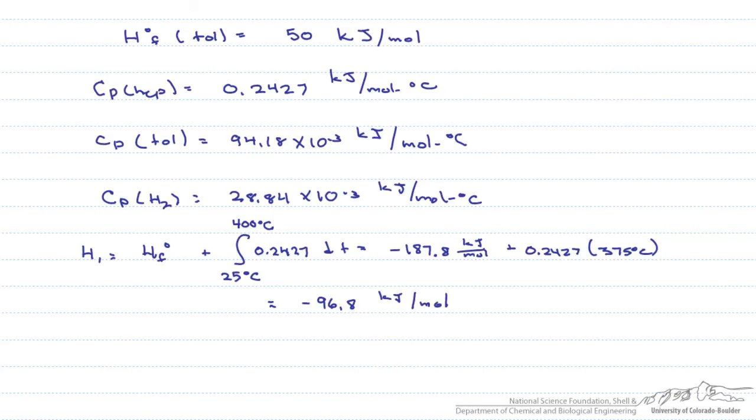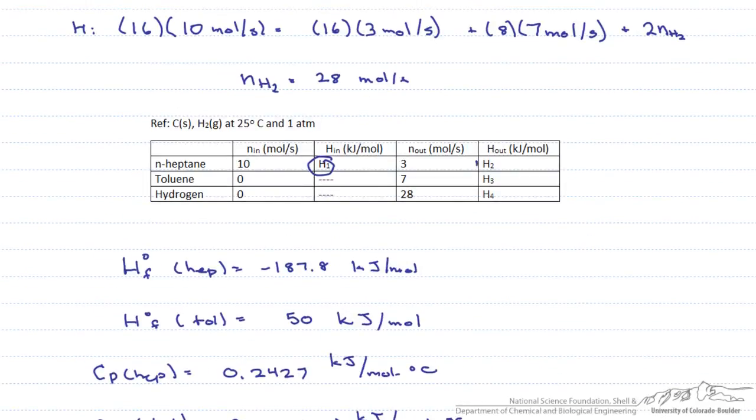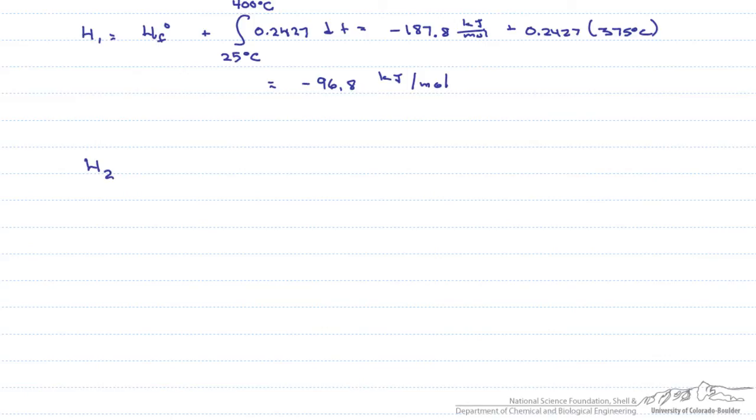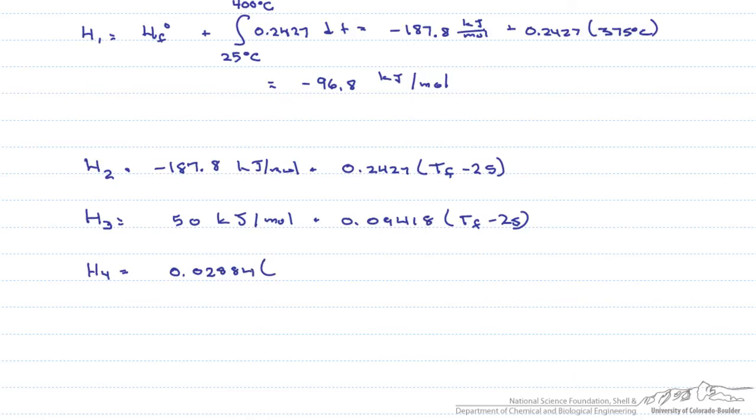We don't know the final temperature, so we have to write these outgoing enthalpies as a function of that temperature. H2 equals the heat of formation plus our heat capacity of heptane times the final temperature minus the reference temperature. We do this for all three enthalpies. Note they are all a function of that final temperature. Also, because hydrogen doesn't have a heat of formation, we write this only in terms of its heat capacity.